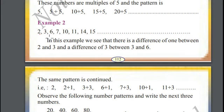Example 2: 2, 3, 6, 7, 10, 11, 14, 15. Now let us see what the pattern is. Take the first number and second number and take the difference. The difference is 1: 3 minus 2 equals 1.